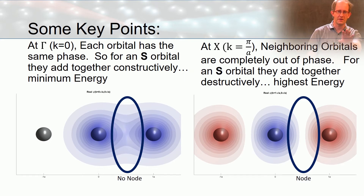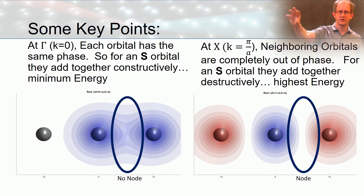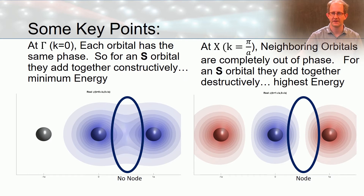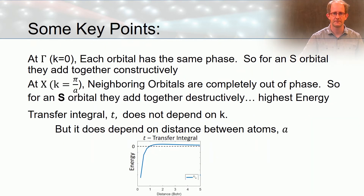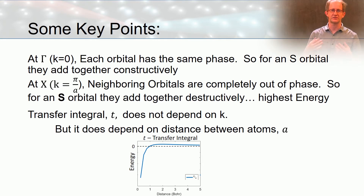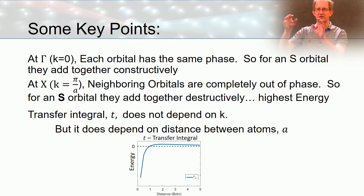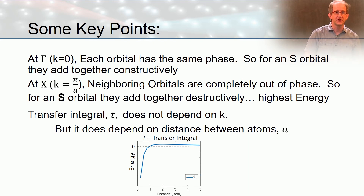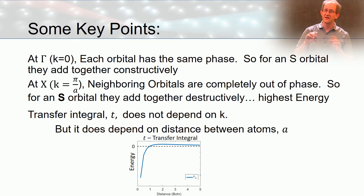At the gamma point we have constructive interference and no node. At the X point, the Brillouin zone boundary at π/a, we have a node between every atom — the highest energy state. The last thing to touch on is the transfer integral. Our Hamiltonian connects one atom to its nearest neighbor. That transfer integral t does not depend on crystal momentum — it's independent of crystal momentum — but it does depend on the distance between two atoms.